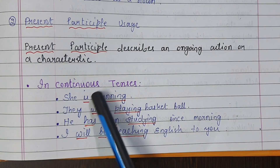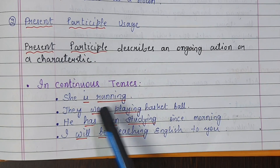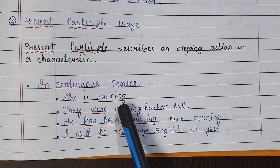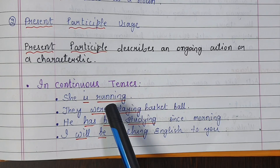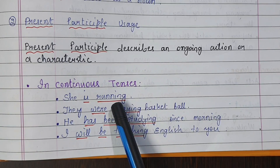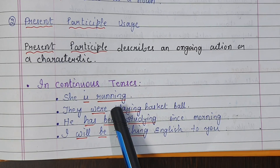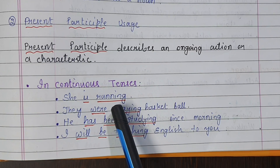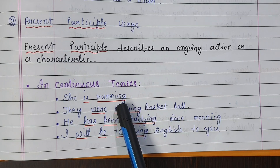For example: 'She is running.' Running is be-verb plus the ing form of a verb. The action is ongoing — running is going on. So running is a part of the tense; it is present participle, part of a verb tense that expresses tense.